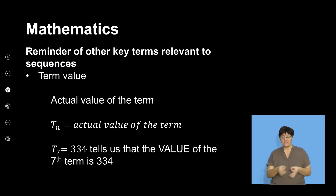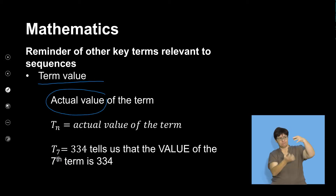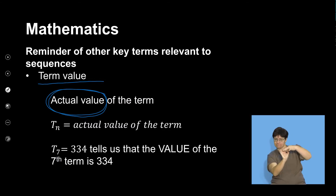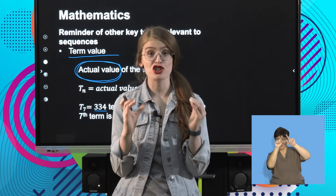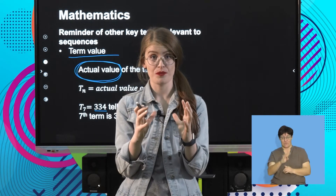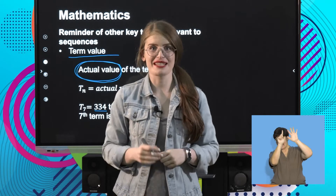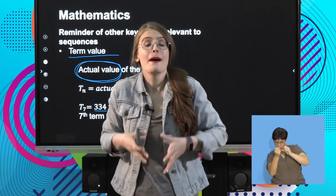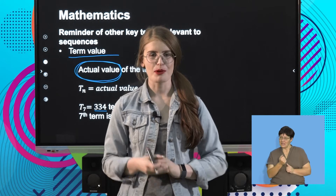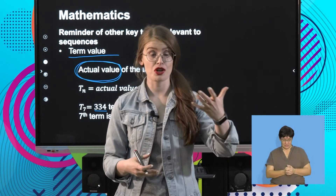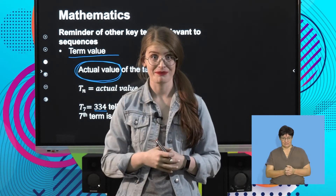Then we move on to the definition of term value. Term value refers to the actual value of the terms — this is not the term number, it is the actual value of the term. So if I say T7 is equal to 334, that means that the 7th term has an actual value of 334. The term number is 7 because it's in the 7th position of the sequence, but the value of the 7th term is 334. Please make sure you're comfortable with the differences between term value and term number.